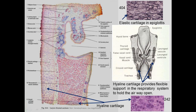Coming down from the oral cavity, the epiglottis regulates flow of air down to the larynx and trachea versus the esophagus. It has elastic cartilage with elastic fibers and chondrocytes visible in the matrix. Most of the respiratory system, however, has hyaline cartilage, which provides flexible support — holding the airway open yet not rigidly, allowing some adjustment.